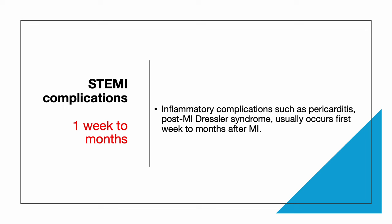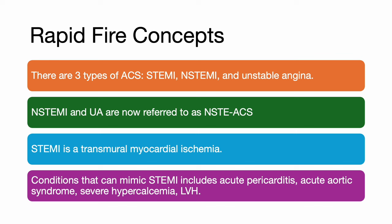ST elevation MI complications that occur one week to even months after an MI include inflammatory complications such as pericarditis and post-MI Dressler syndrome. Now for some rapid-fire concepts: there are three types of acute coronary syndrome — ST elevation MI, NSTEMI, and unstable angina. NSTEMI and unstable angina are now referred to as NSTE ACS. ST elevation MI is a transmural myocardial ischemia, and conditions that can mimic it include acute pericarditis, acute aortic syndrome, severe hypercalcemia, and left ventricular hypertrophy.